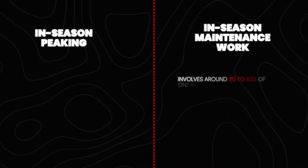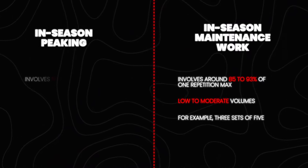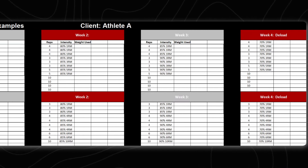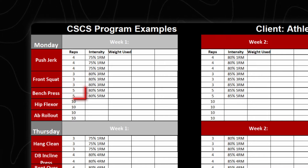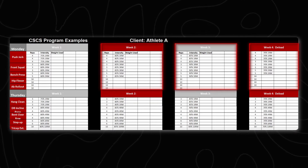For in-season maintenance, this will be very power-focused with low to moderate volume. We're seeing exercises like power snatch, front squat, and bench press with set and rep ranges like three sets of four, three sets of three, or two sets of five. When looking at intensity, don't just look at week one since it's often an intro week. Look at weeks two, three, and four to see the actual intensity for the majority of the program — around 80 to 90% one rep max with low volume.